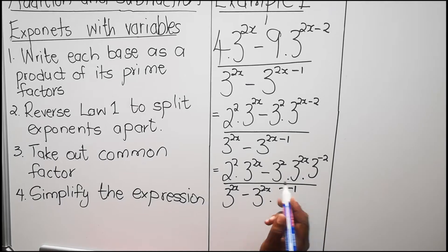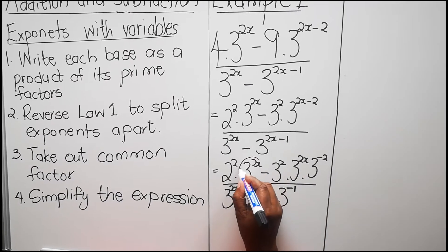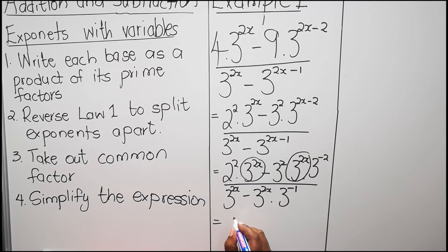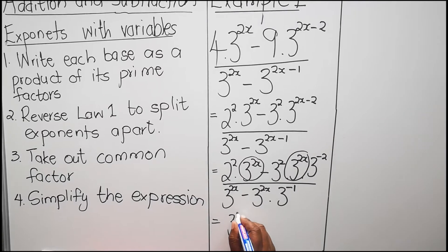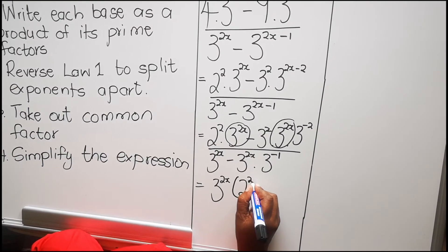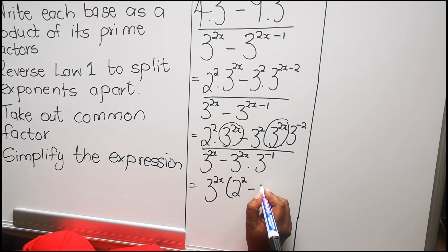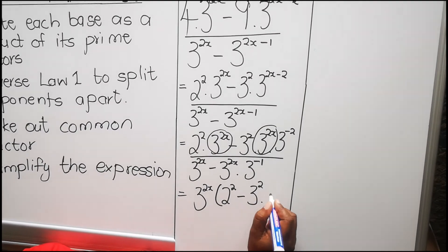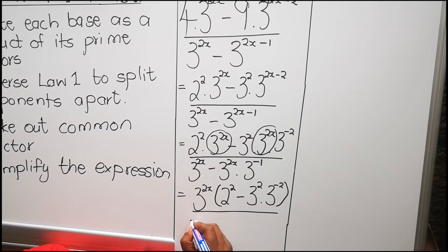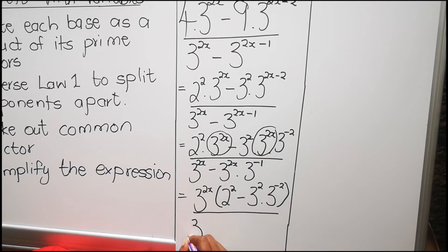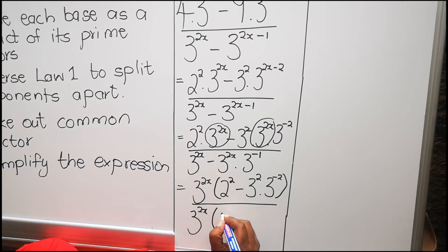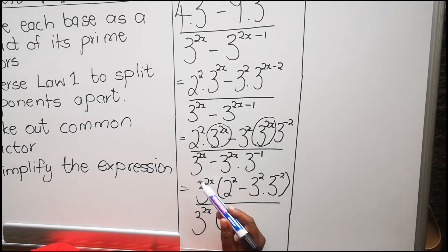After that you take out the common factor. When you look at this term, this is common with that in the next term. So our common factor will be 3 to the power 2x. With the first term, we have 2 to the power 2 left. Minus, with this term, we have 3 to the power 2 and 3 to the power minus 2. With the denominator, we have the common factor 3 to the power 2x. With the first term, we don't have anything so we are going to multiply it with a 1. Please Grade 10s, don't forget to write that 1.